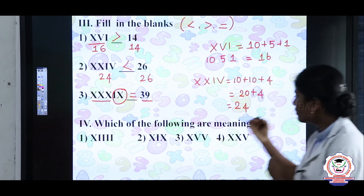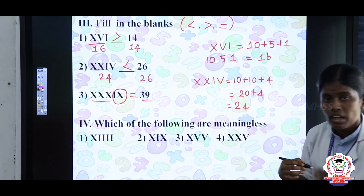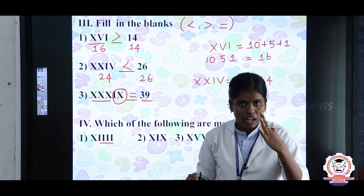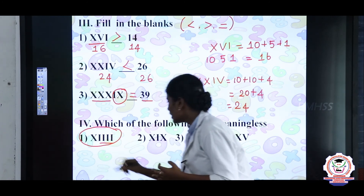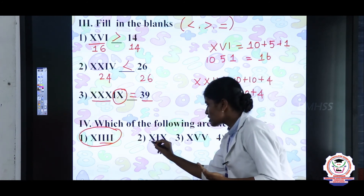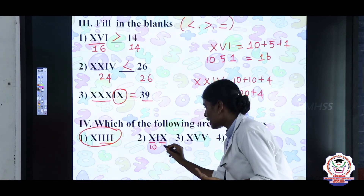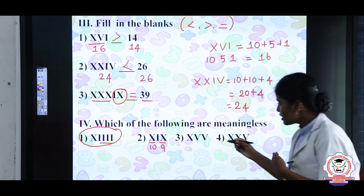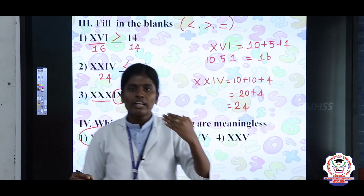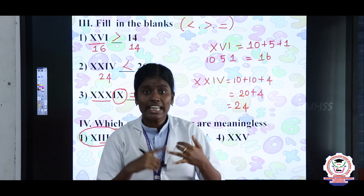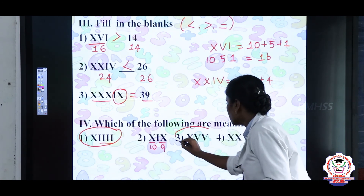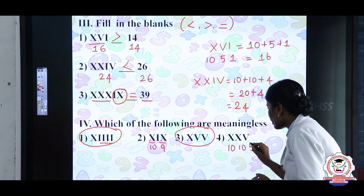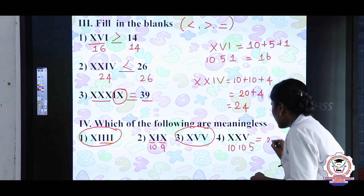Our final topic: which of the following are meaningless? Remember, repetition of a symbol is allowed only up to 3 times. So symbols repeated more than 3 times are meaningless. XIX is meaningful — X is 10 and IX is 9, so XIX equals 19. XVV is meaningless because V cannot be repeated. XX plus V equals 25.